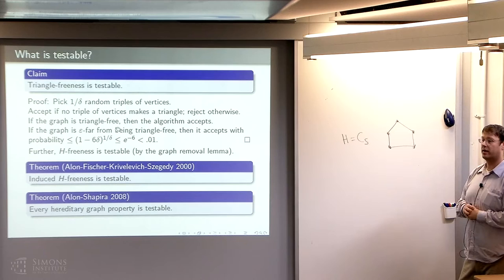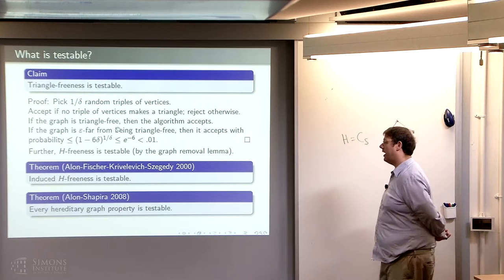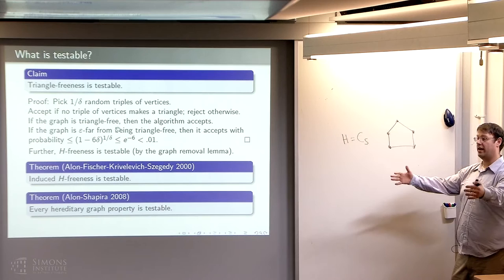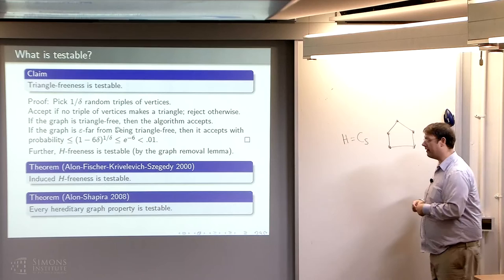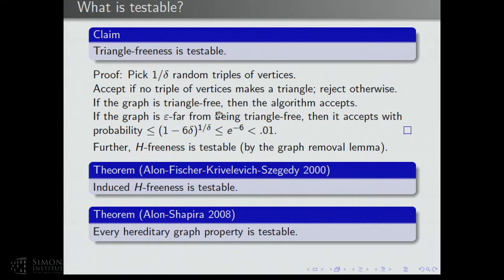Later, Alon and Shapira showed that every hereditary graph property is testable. A graph property is hereditary if it's closed under induced subgraphs — if you have a graph in your family, whenever you look at an induced subgraph of it, it's also in your family. These are essentially the natural properties you come across in graph theory. This is a very general result, equivalent to an infinite removal lemma: for an infinite family of graphs, you can have a removal lemma, again using strong regularity lemmas and additional ideas.